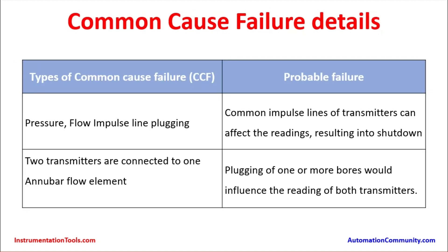We will now cover the types of common cause failures in safety instrumented systems and their probable results. The first type is pressure and flow impulse line plugging. As discussed in another video about impulse line tapping, if the impulse line is plugged for pressure or flow measurement, the common impulse line of the transmitters can affect the readings, resulting in shutdown. When plugging occurs, the instrument reading becomes erratic and eventually may lead to failure.